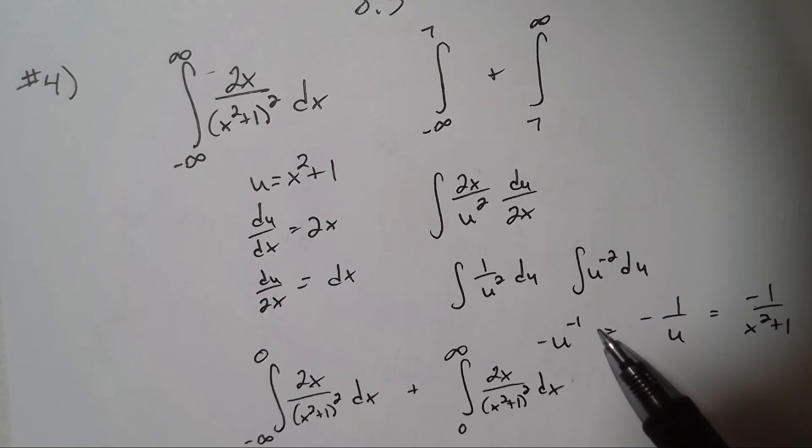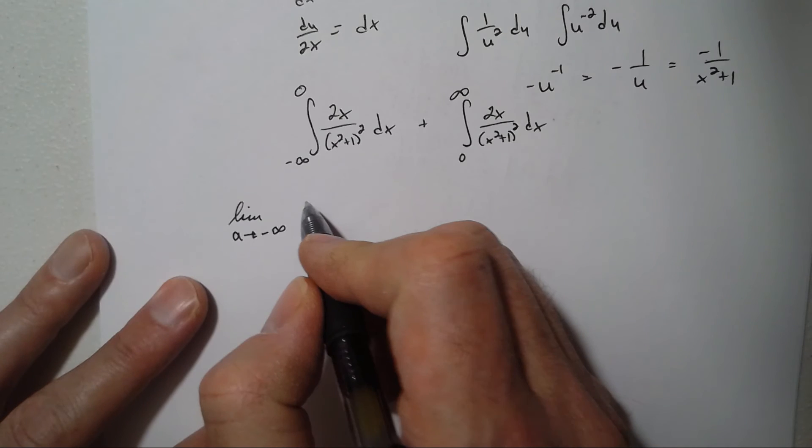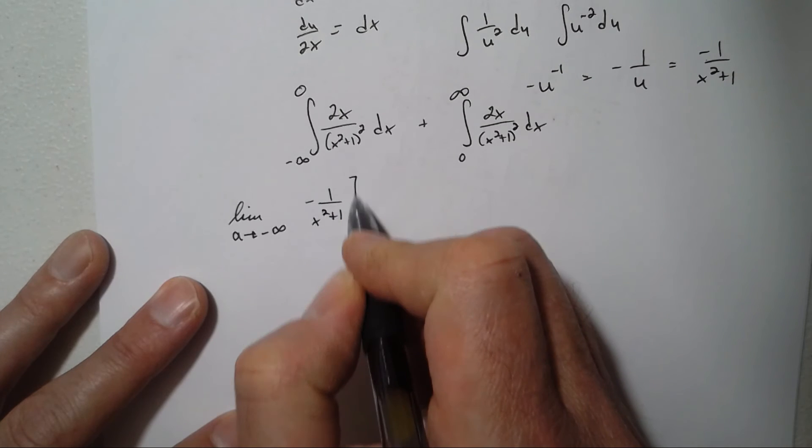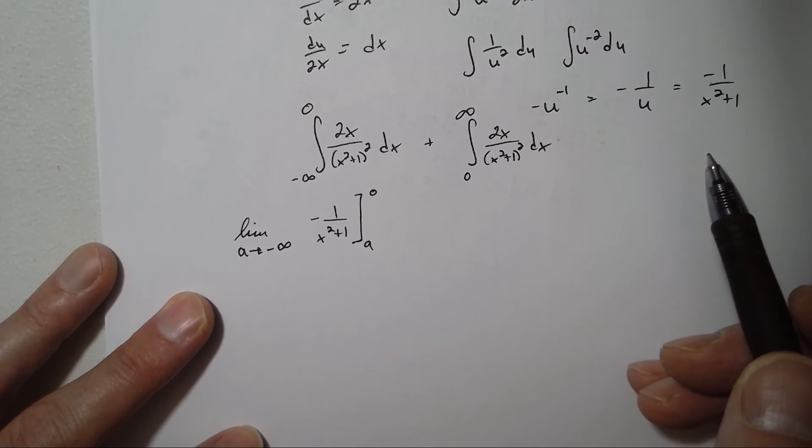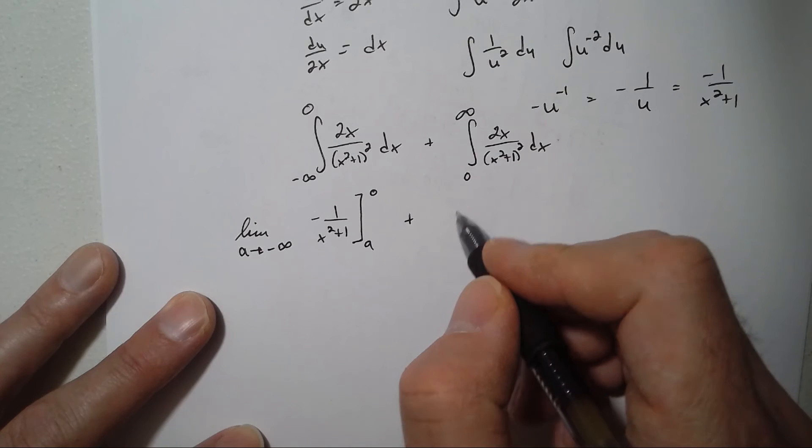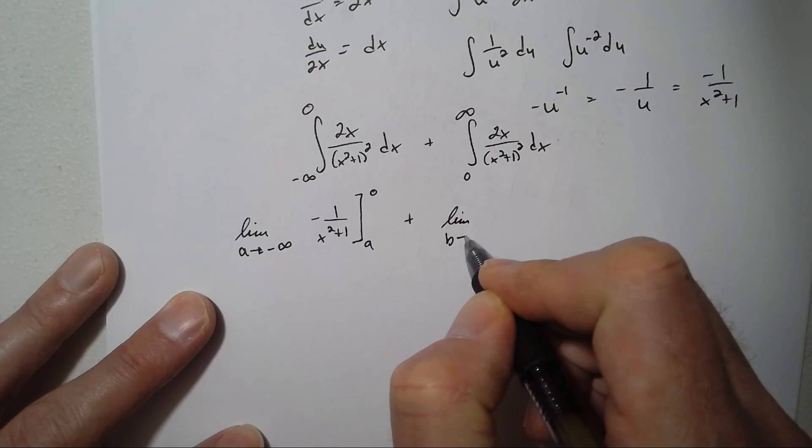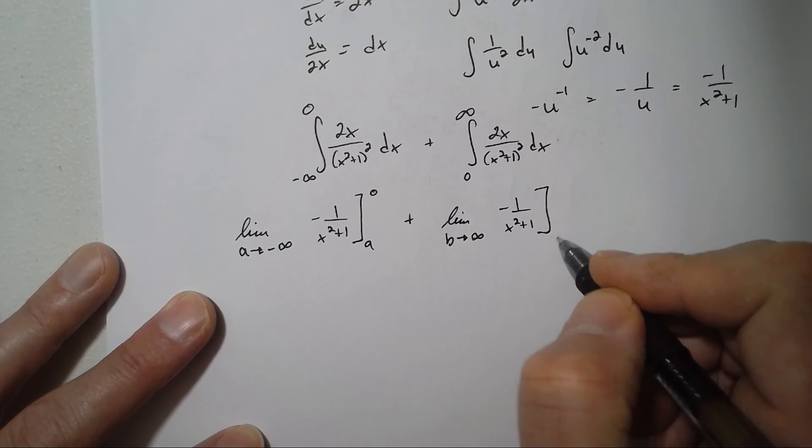Since it's the lower one here, or the left one, that's our a. So we're going to find the limit as a goes to negative infinity. I know what the anti-derivative is, so it's negative 1 over x squared plus 1 from a to zero. And we're going to add that. This is going to be b, so it's the limit as b goes to infinity, negative 1 over x squared plus 1 from 0 to b.